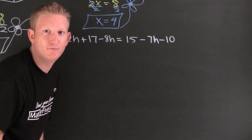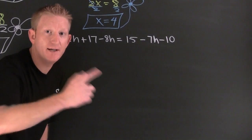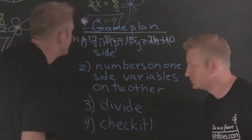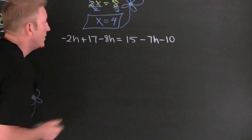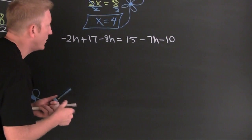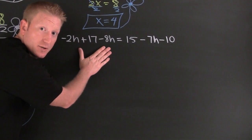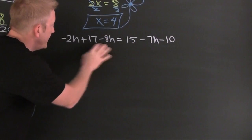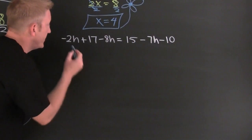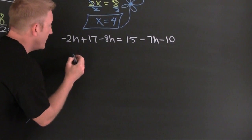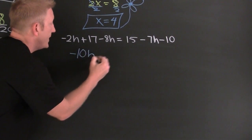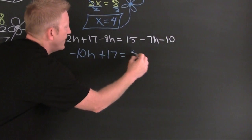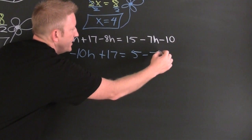We have a game plan: simplify each side, numbers on one side, letters on the other, then divide. Do I have any like terms? Like terms are terms with exactly the same variables raised to exactly the same powers. Simplify each side — I have h's over here. Minus 2h minus another 8h is minus 10h, plus 17 equals 15 minus 10 — that's 5 minus 7h.